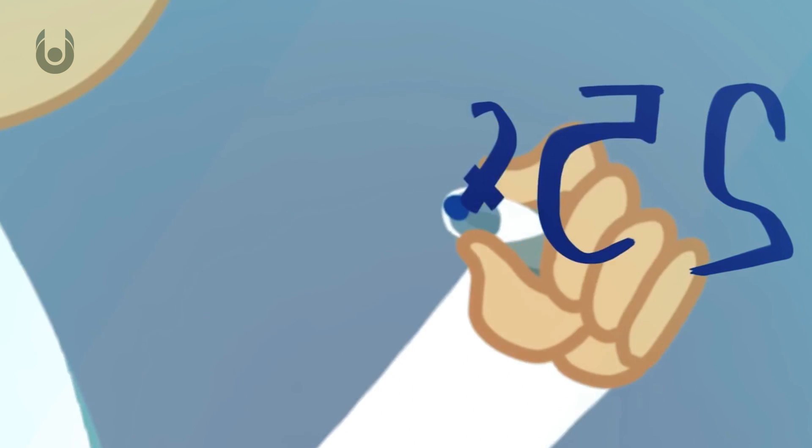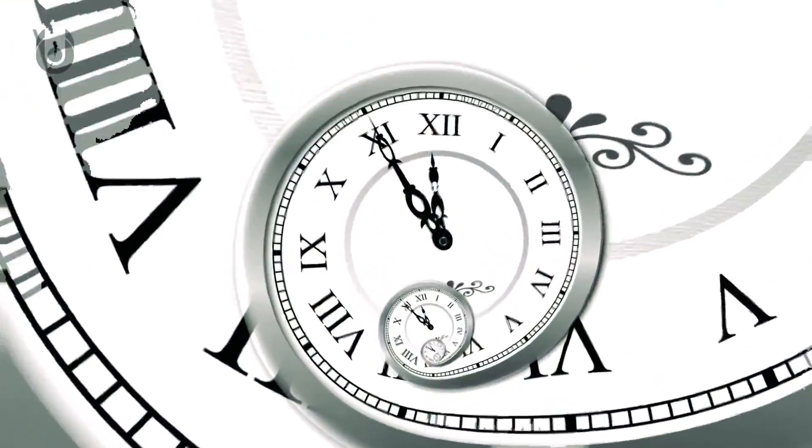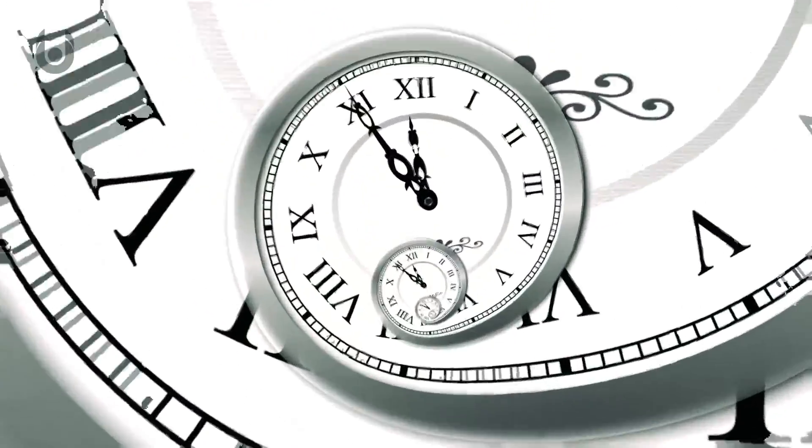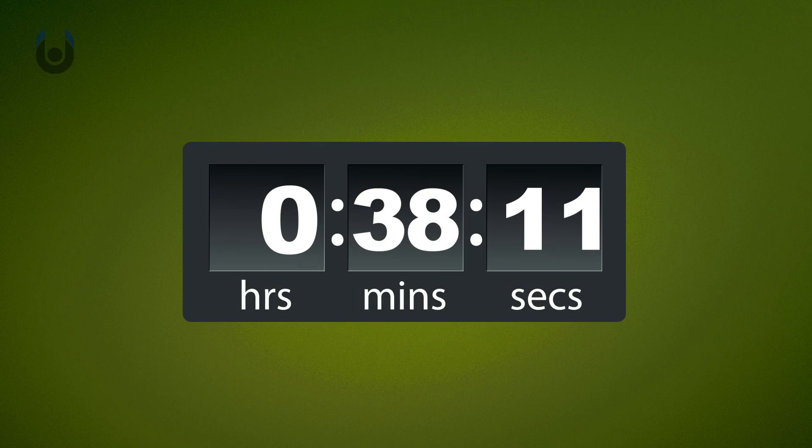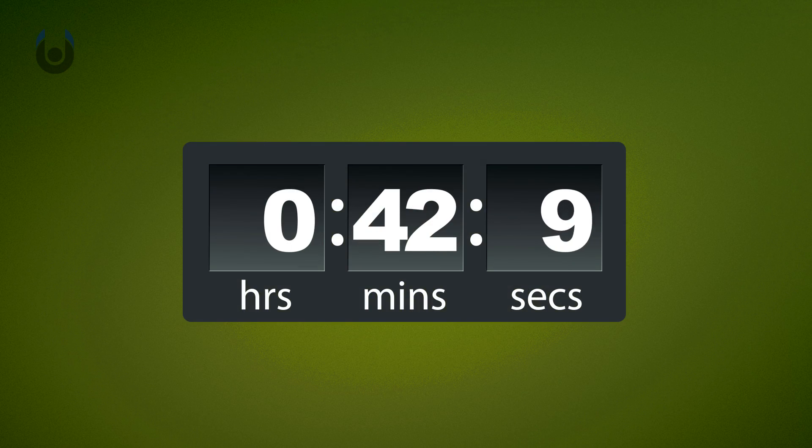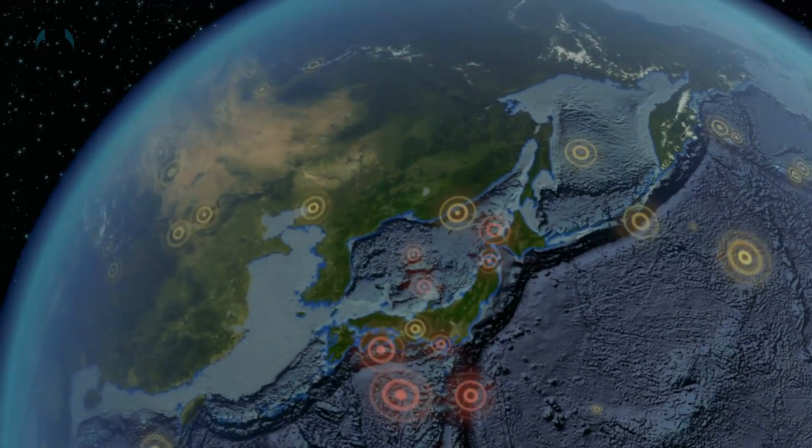That was until someone by the name of Alexander Klotz, a graduate student in physics at McGill University in Montreal, Canada, predicted that an object should fall through earth in 38 minutes and 11 seconds instead of the 42 minutes and 12 seconds that was previously predicted. The difference is that his planetary reference model is based on seismic data.